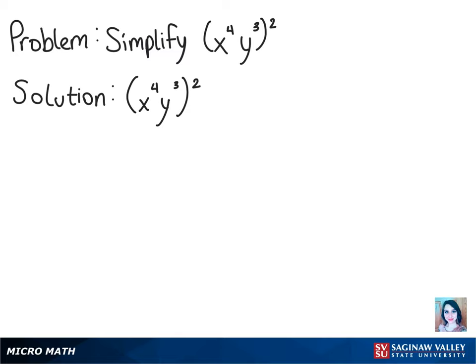To solve this problem, we need to use the property of exponents. In this case, we will have to multiply the exponents. We have x to the fourth power times y cubed, both squared.